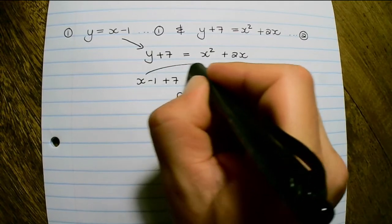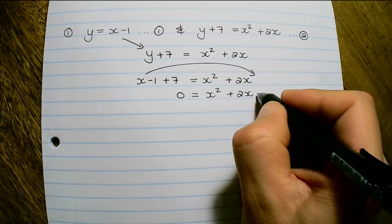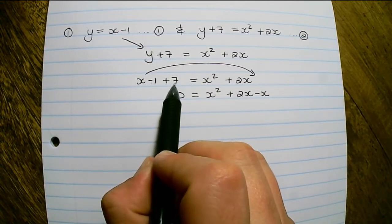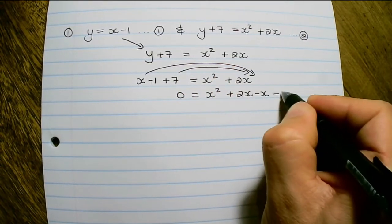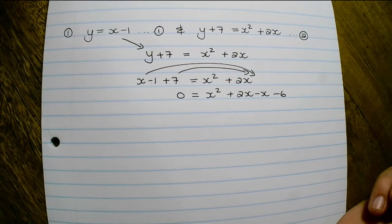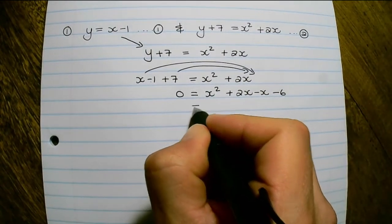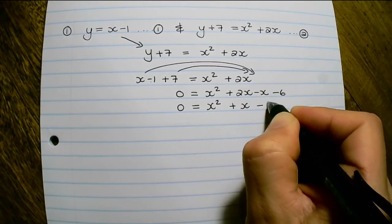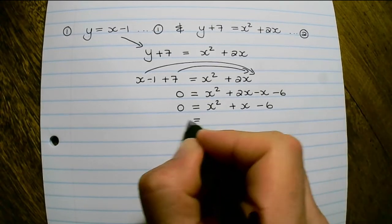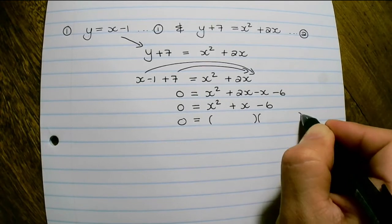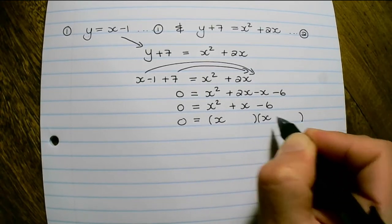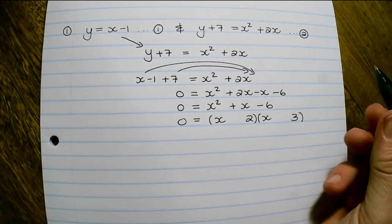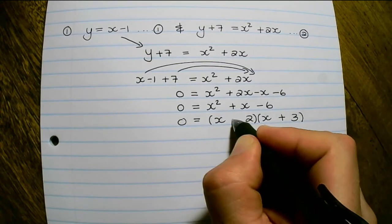When I transpose, the x will change to negative x, and negative 1 plus 7 is positive 6, and when I transpose it becomes negative 6. Now I can add up like terms so it's x squared plus x minus 6. That is easy to factorize — it is x and x, and the factors of 6 that will create 1 are 3 and 2, therefore it will be plus 3 and minus 2.